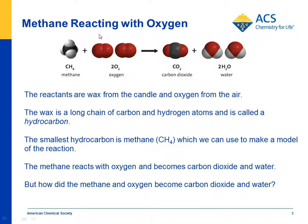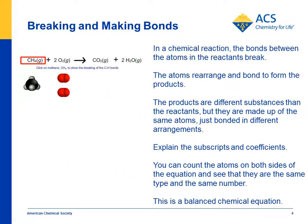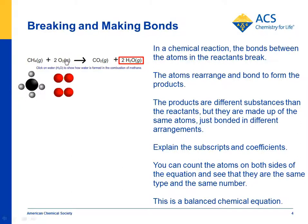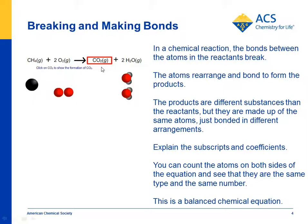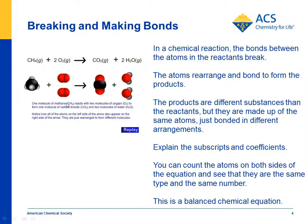Now the question is: how do these reactants become these products? We have an animation that shows the methane and the oxygen on one side of the equation. If you click on the formula for methane, it breaks up into the carbon and the four hydrogens. You do the same for the oxygen. Then if you click on one of the products, you can form it here, and if you click on the other one, it forms here. This gives you the whole reaction.